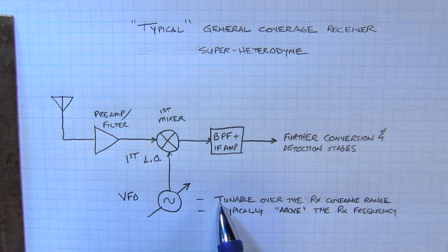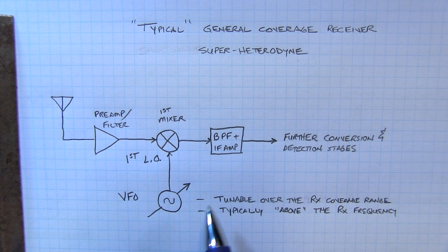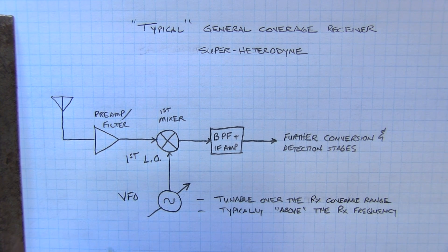Typically the VFO is tunable over the entire frequency range that the receiver is designed to operate over, and typically operates at a frequency above the receiver's frequency range. So given that it's operating at a high frequency and tunable over such range, making these VFOs stable with very little drift over time and temperature was a difficult thing to do.